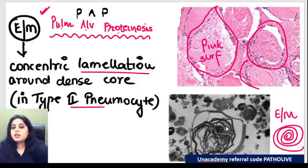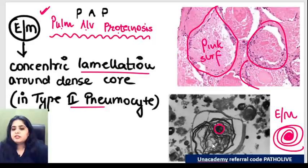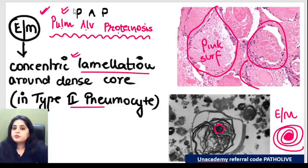In the exam, don't confuse lamellar bodies with myelin figures from the cell injury chapter. In a lamellar body, the center will be very dense - a center dot black color - and then the periphery is a little loose. The peripheral layers are a little loose. That is how you identify the lamellations in pulmonary alveolar proteinosis: a dense center and then loose layers on the periphery.